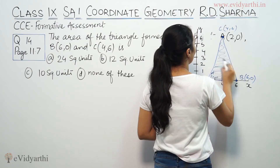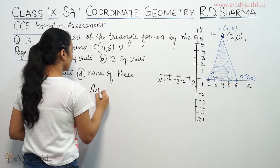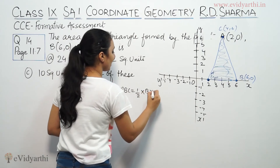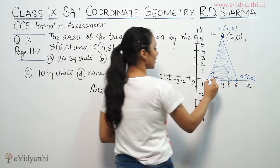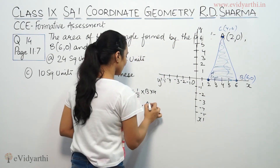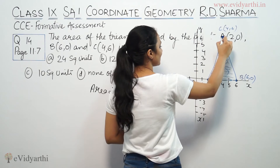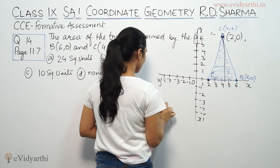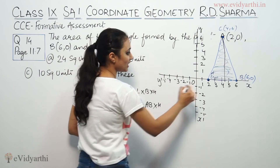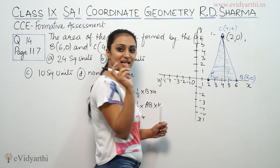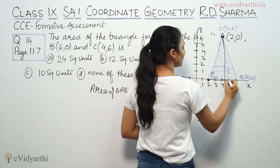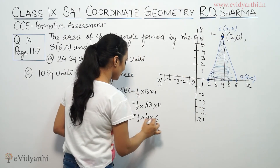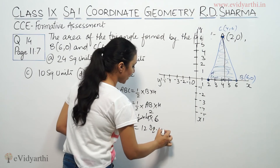Now we have to find the area. Area of triangle ABC is half into base into height. Here the base is AB — counting the boxes, AB is 4 units. And the height is 6 units. So area is one-half times 4 times 6, which equals 12 square units.